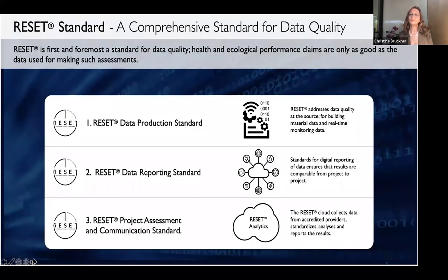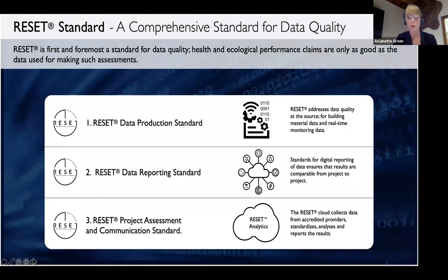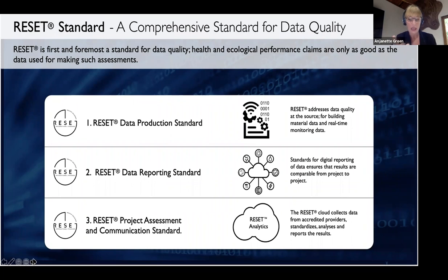There are three comprehensive parts to a data quality program. 2020 was a pretty intense year, and there are very few standards out there when it comes to data and data quality. I cannot stress the importance enough of having standards for data quality on every level in our modern world. Reset offers three important levels of data evaluation: it's a production standard — does data come from authoritative sources? A reporting standard — how does that data get aggregated? And a project assessment tool — how is that data being communicated and easily understood?